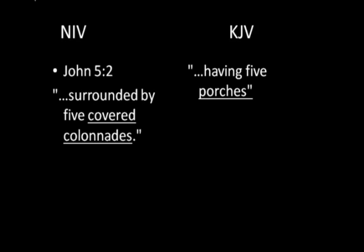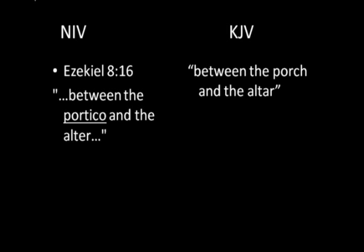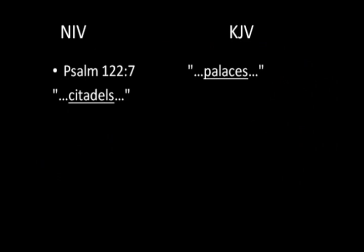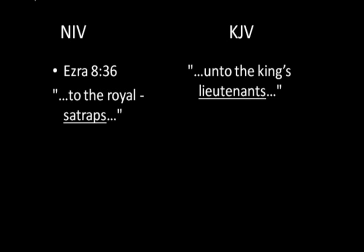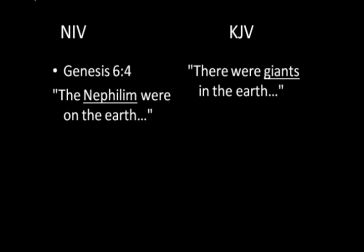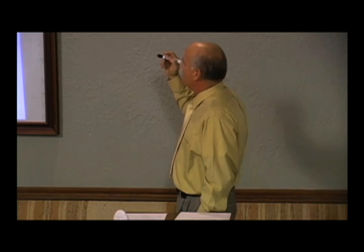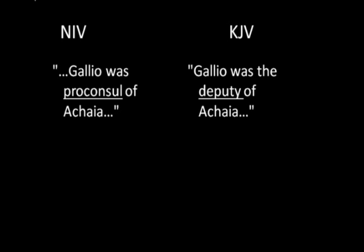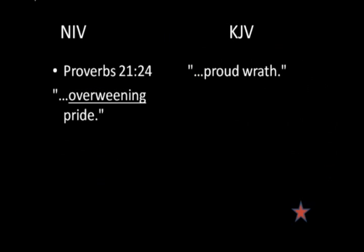John 5:2 — NIV says 'surrounded by five covered colonnades'; King James says 'having five porches.' You tell me which is easier. Ezekiel 8:16 — NIV says 'between the portico and the altar'; King James says 'between the porch and the altar.' Psalm 122:7 — NIV says 'citadels'; King James says 'palaces.' Ezra 8:36 — NIV says 'to the royal satraps'; King James says 'unto the king's lieutenants.' But you all knew what satraps were, didn't you? Genesis 6:4 — NIV says 'the Nephilim were on the earth'; King James says 'there were giants in the earth.' Acts — NIV says 'Gallio was proconsul of Achaia'; King James says 'Gallio was deputy of Achaia.' Proverbs 21:24 — NIV says 'overweening pride'; King James says 'proud wrath.' That's not about updating the language — if it were, those things would have been changed.